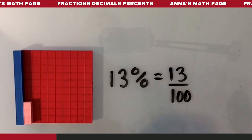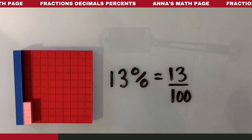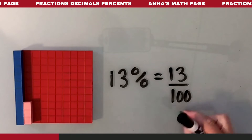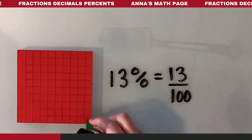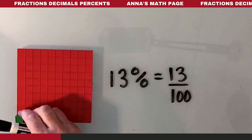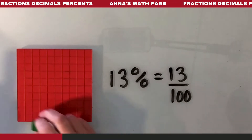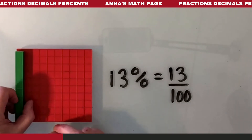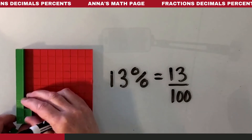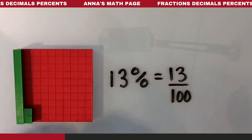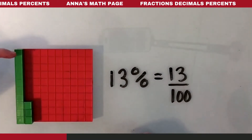This is the hundredth kind on the bottom, which means that it is one of these little green ones. Each hundredth is a little green one — one out of 100. And we need 13 out of 100, so we're going to change the color here to green. And you can see now that we have 13 hundredths.